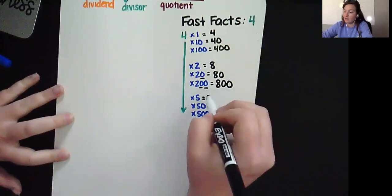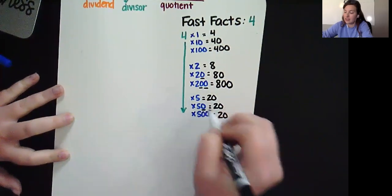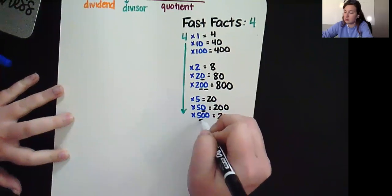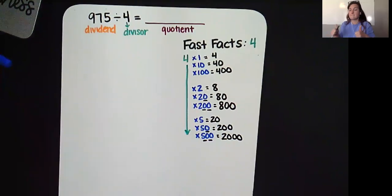4 times 5 would give me 20. So I'm going to go ahead and write 20 all the way down. I need that zero put back on and then these two guys also. Okay, we've got our fast facts. Good to go.